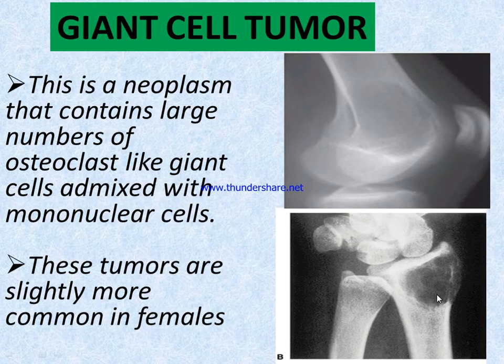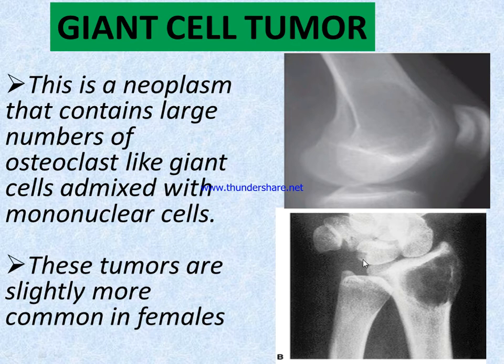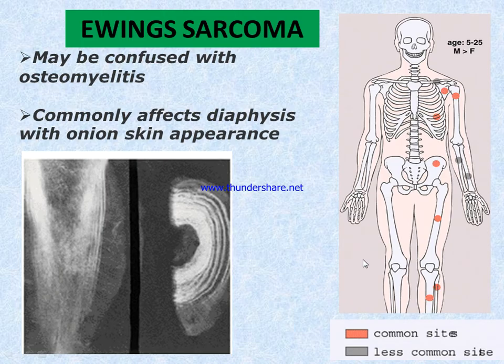Giant cell tumor is a neoplasm that contains a large number of osteoclast-like giant cells admixed with mononuclear cells. This tumor is slightly more common in females — giant cell tumors are most commonly found in females.